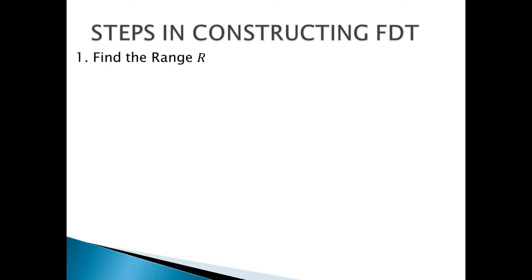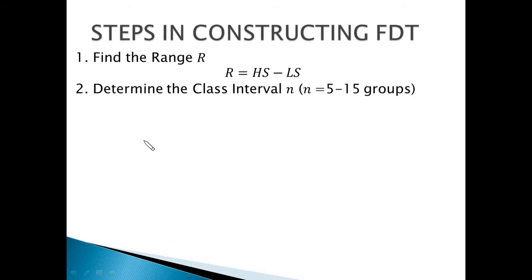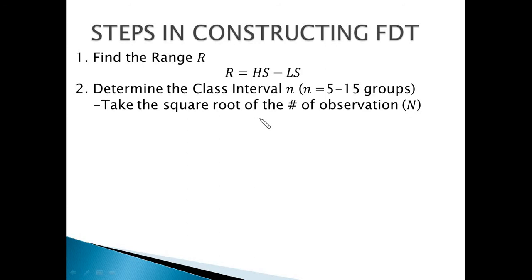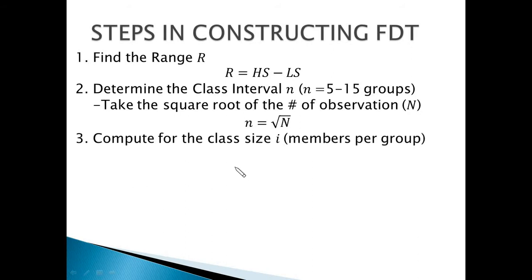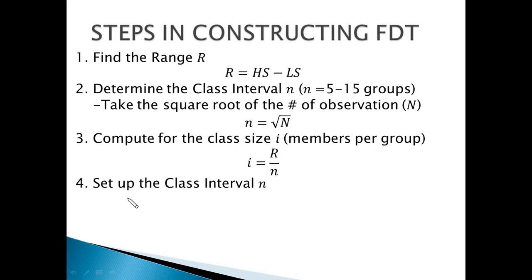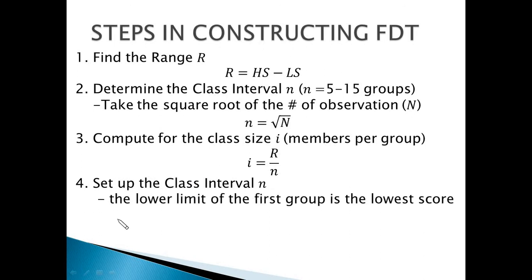Now there are steps in constructing a frequency distribution table. Step one is to find the range — simply take the difference of the highest and lowest score of the given set of data. Step two is to determine the class interval small n by taking the square root of the number of observations, so n equals the square root of N. The result is mostly from 5 to 15 groups. Step three is to compute for the class size i, which is the members per group — take the quotient of the range and the class interval n. Step four is to set up the class intervals: the lower limit of the first group is the lowest score, and the upper limit equals the lower limit plus the class size minus 1 for whole number data.